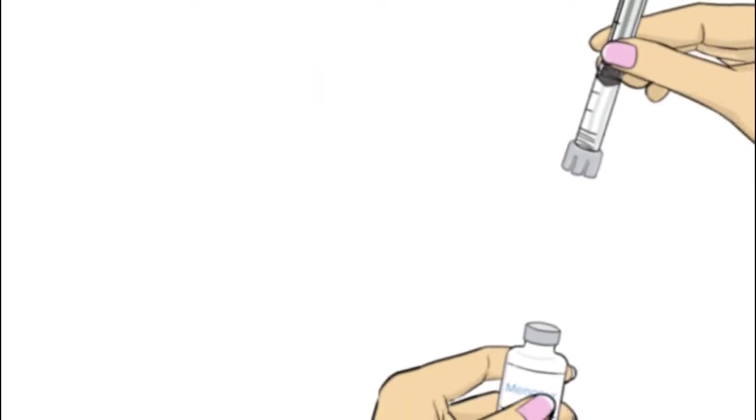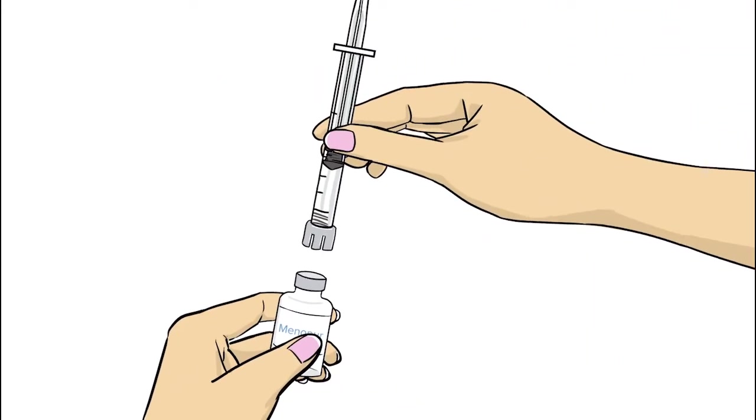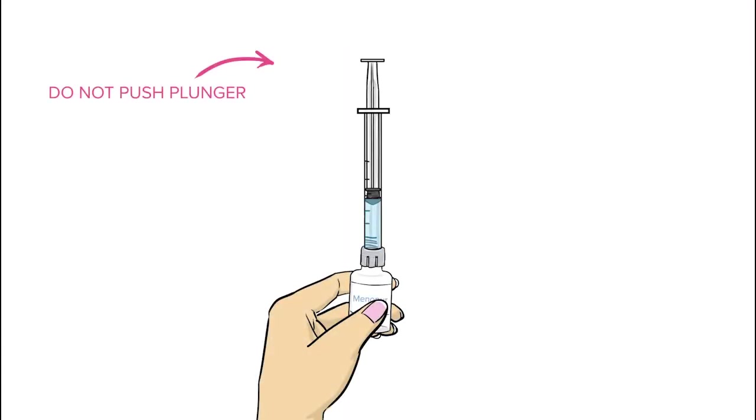With the syringe still attached to the Q-Cap, carefully secure the tip of the Q-Cap over the top of the vial. Be careful not to push down on the plunger while securing the tip.